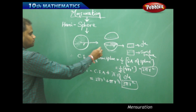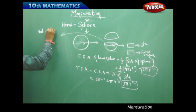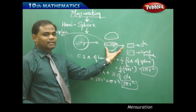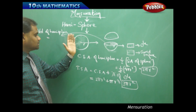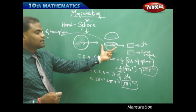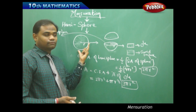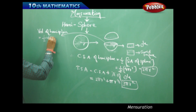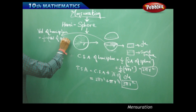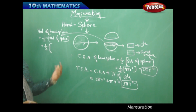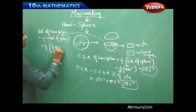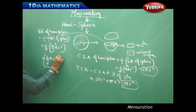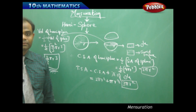Similarly, the volume of a hemisphere is exactly half of the entire sphere's volume. When we cut the ball exactly in the middle, we get half the volume. Therefore, the volume of hemisphere is half the volume of sphere. Since the volume of a sphere is (4/3)πr³, the volume of a hemisphere simplifies to (2/3)πr³.